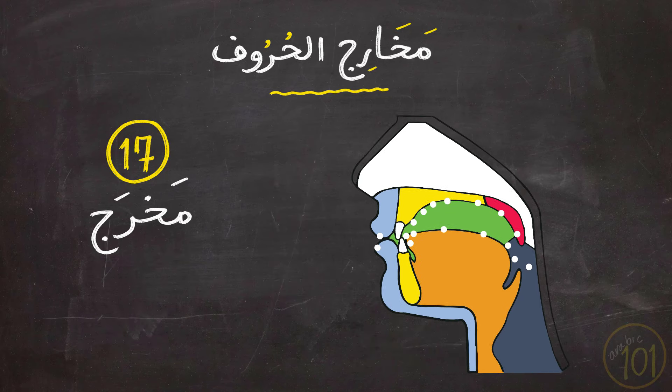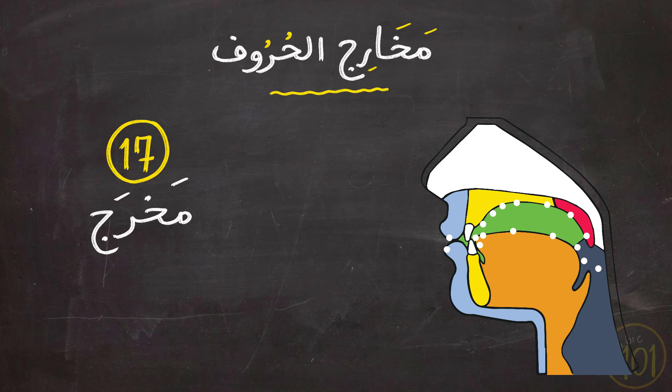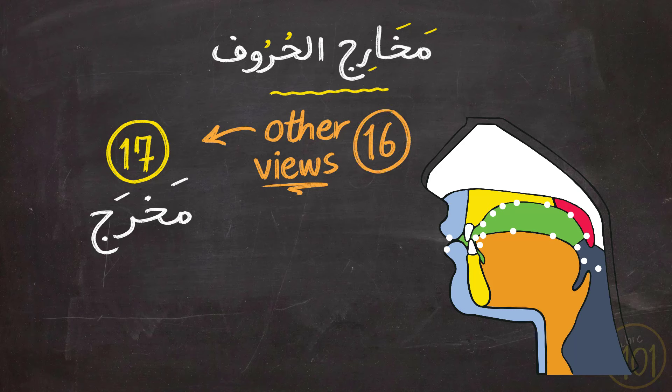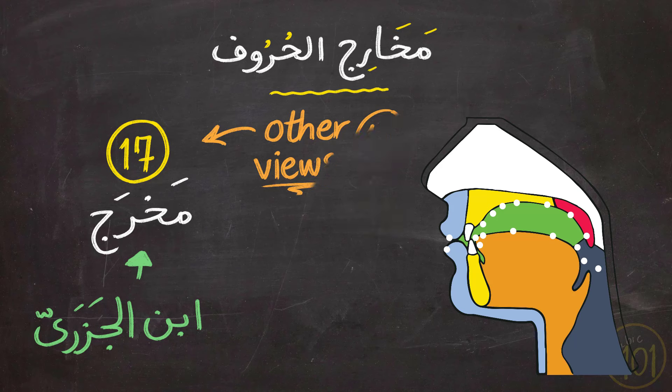It is important to know that there is a difference among linguists and grammarians on how many makharaj there are. Some say they are 16, others say they are 14. But in my study, and in this course, I will be depending on the division made by Ibn al-Jazari, since it is the closest to the study of the Quran and the Arabic, and is an easier one to understand, insha'Allah.